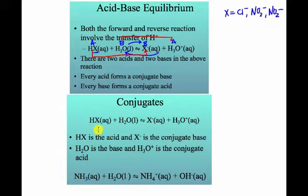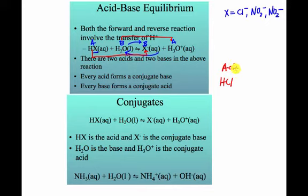If we look at the example here, we can see that this is the acid, and we can see that this is the conjugate base. Typically if we call them conjugates, we say that this is the acid and this is the conjugate base. So if I have HCl, this is the acid, and the conjugate base would be what's left behind after the acid does what it does. What does an acid do? It loses hydrogen ions.